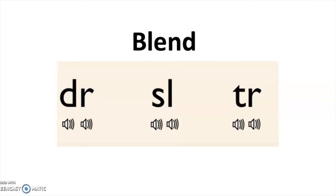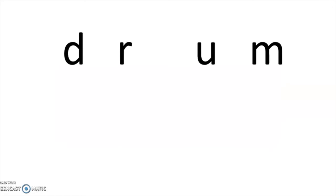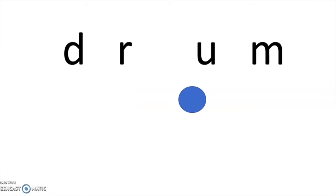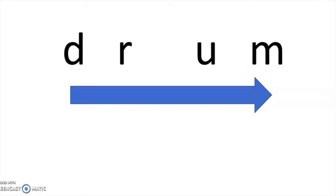Let's review some blends together. Here's the word D-R-U-M. I know that this is a closed syllable because it has the one vowel U closed in by that consonant M. When I sound out this word, it sounds like this: D-R-U-M — Drum. If you notice, the D and the R each make their own sound. They are the blend.